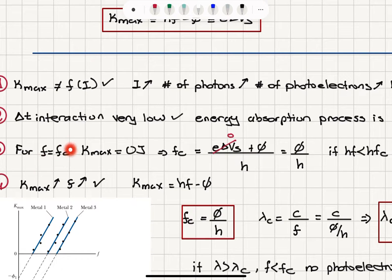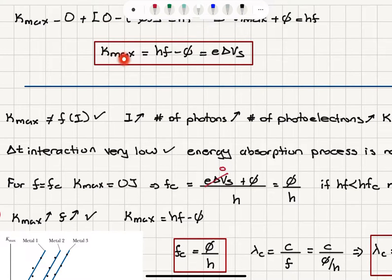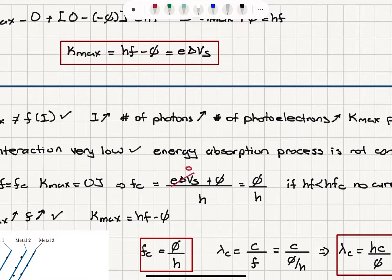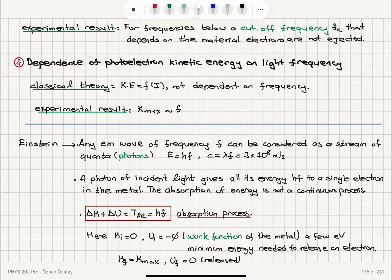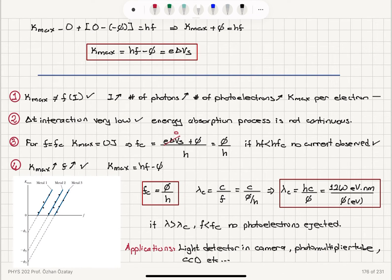There is a cutoff frequency. For f equals f_c, the maximum kinetic energy equals zero joules. Setting maximum kinetic energy to zero means e·delta Vs is zero, so the cutoff frequency equals phi divided by h. If the photon energy hf is less than hf_c, the energy supplied to the electron will not be enough to overcome the work function of the metal, and therefore no photoelectron will be ejected and no current will be observed.